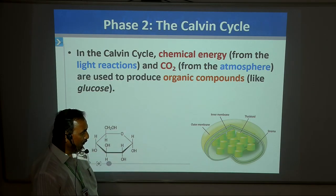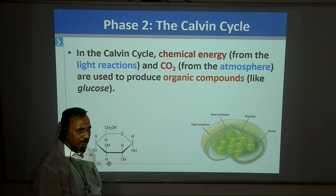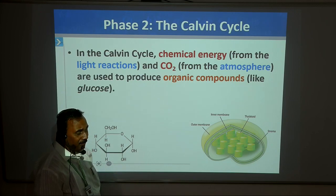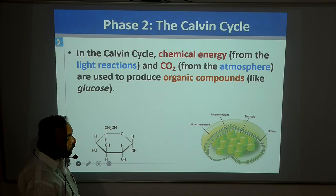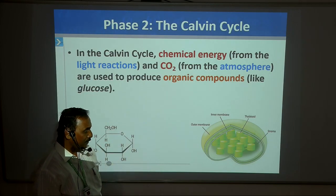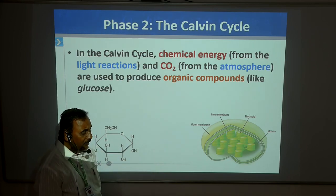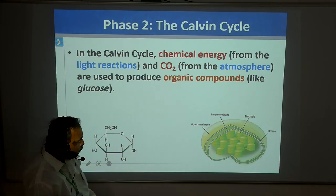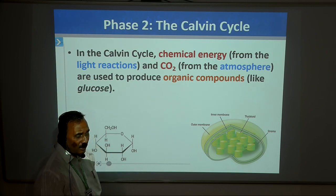In this Calvin cycle, some chemical energy from the light reaction in the form of ATP and NADPH2 — actually NADPH2 is a hydrogen donor and ATP is the main source of energy. The energy is stored in the third phosphate of ATP. This CO2 from the atmosphere is used for the formation of organic compounds — different types of organic compounds. For example, glucose sugar, hexose sugar. Not only these sugars — 3-carbon sugars, 4-carbon sugars, 5-carbon sugars, and 7-carbon sugars are also synthesized in this stroma region.